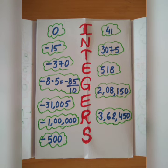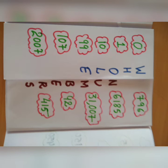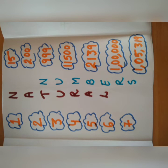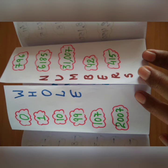On the next door we will show integers. On the next door we will show whole numbers. And at the last we have natural numbers, which has the starting point as one.